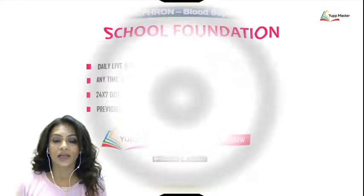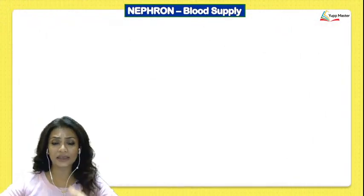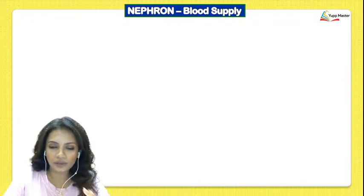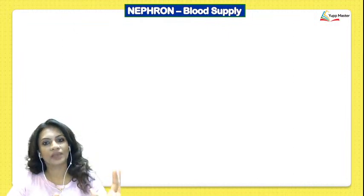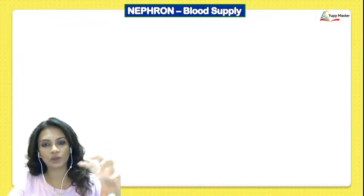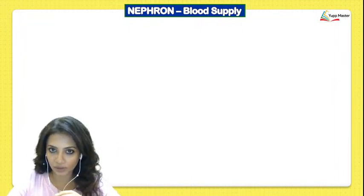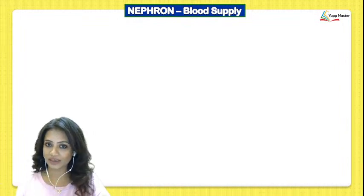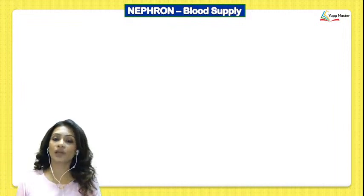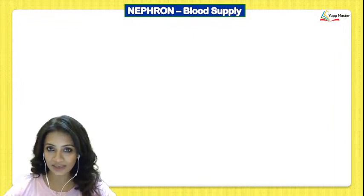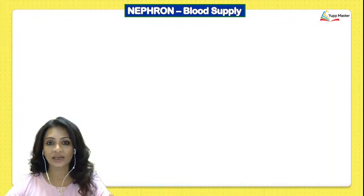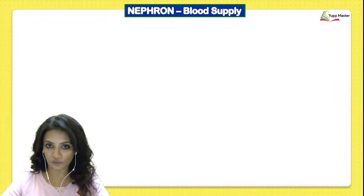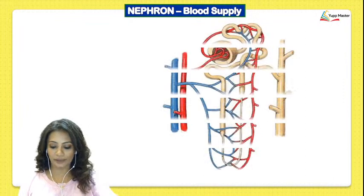Before we begin, let's start with the basic blood supply of the nephron. For any given organ in our body, there is a network of blood vessels carrying oxygenated blood to that organ. The organ utilizes the oxygen and gives out carbon dioxide, which is taken away by the veins. In the case of the kidney there is a little difference, so let's mark where that difference is.